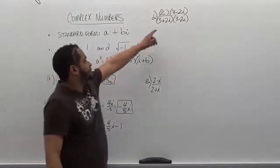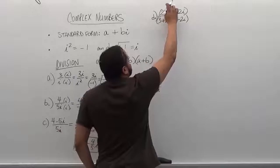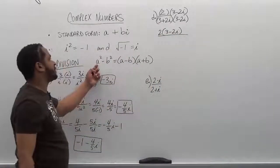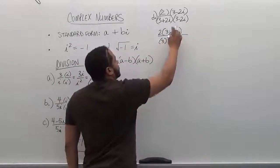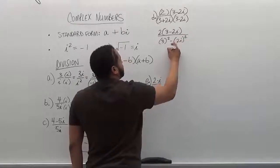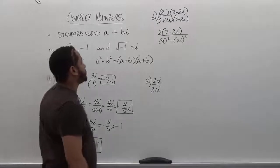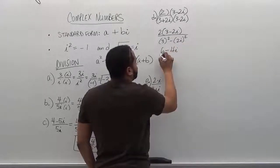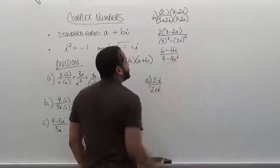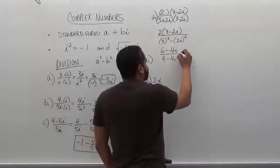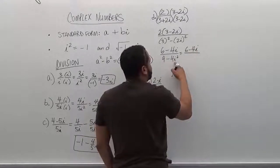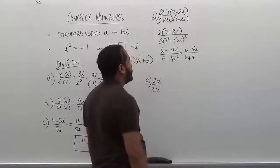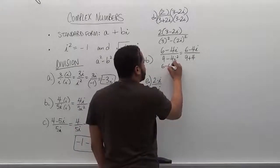We multiply top and bottom by 3 minus 2i. On the denominator we now have the difference of two squares: 3 squared minus 2i squared. For the numerator, multiplying 2 by 3 minus 2i gives us 6 minus 4i. On the bottom we have 9 minus 4i squared. Since i squared becomes negative 1, that's 9 minus 4 times negative 1, giving a denominator of 13. So we have 6 minus 4i over 13.